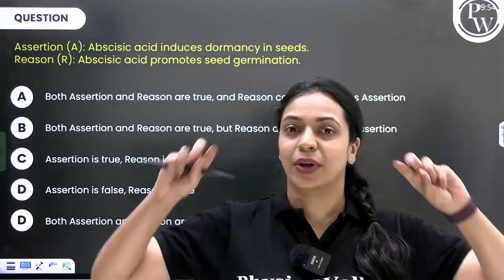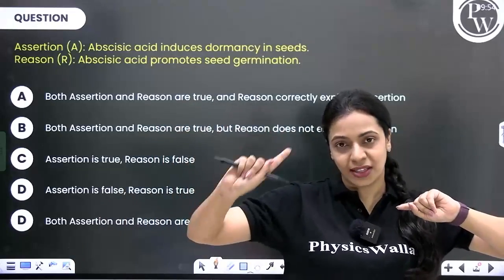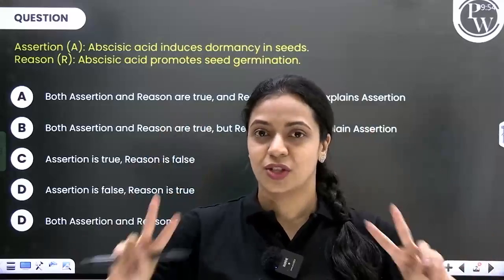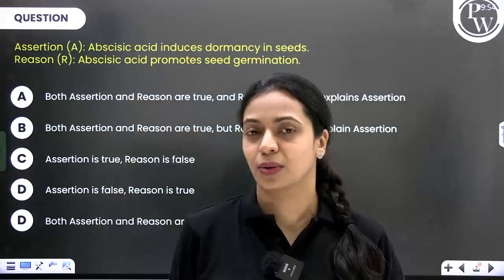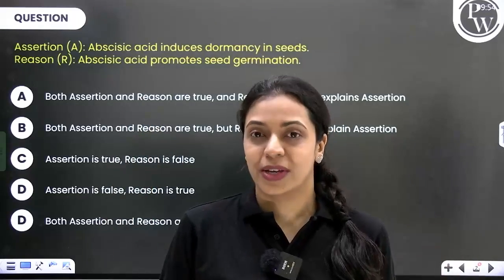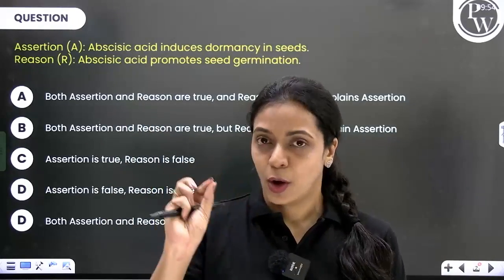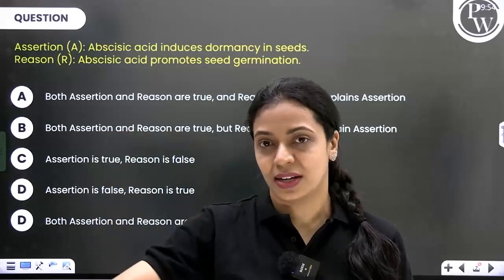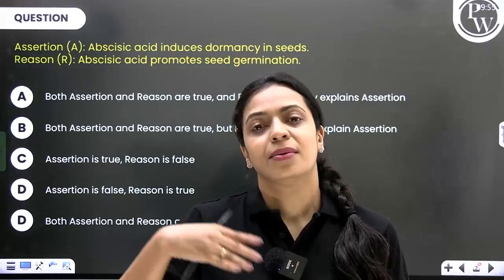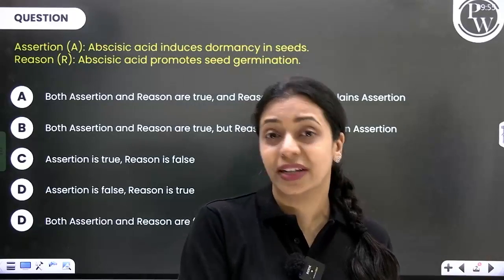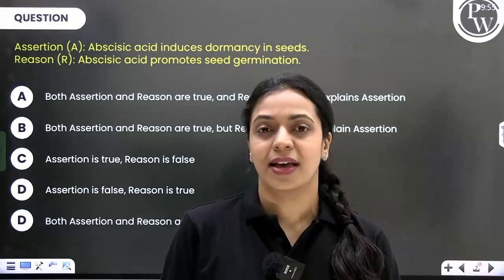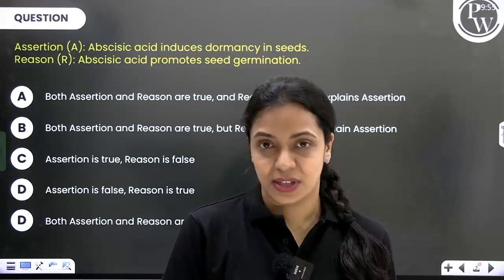In the question, there are going to be two statements. One statement is called the assertion and the following statement is called the reason. There will always be two statements given — one for assertion, one for reason. Following these two statements, the options are almost always going to be the same. You will have one option that says both assertion and reason are true and reason correctly explains the assertion. Another option would be both assertion and reason are true but the reason does not explain the assertion correctly. The third option would be assertion is true but reason is false, and the fourth option would be assertion is false but the reason is true.